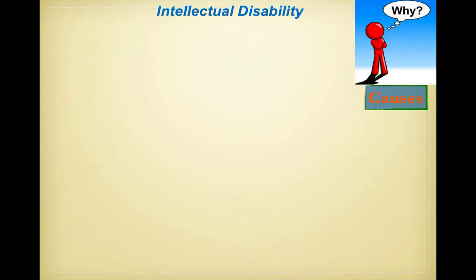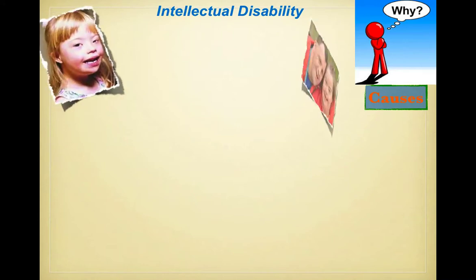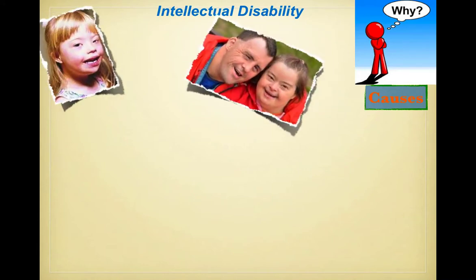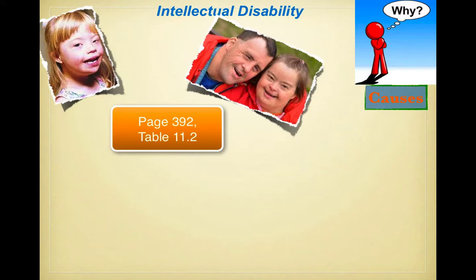Moving into intellectual disabilities — intellectual disability refers to the general delay in the development of intellectual and adaptive abilities. Most cases fall in the mildly intellectually disabled range. The DSM-5 uses three criteria in diagnosing intellectual disability: deficits in intellectual functioning as per standardized tests such as IQ tests; evidence of impaired functioning in adaptive behavior — how they interact and function in day-to-day experience; and onset of the disorder in a developmental period, that is early childhood. See page 392, Table 11.2 for the classification of developmental delay.